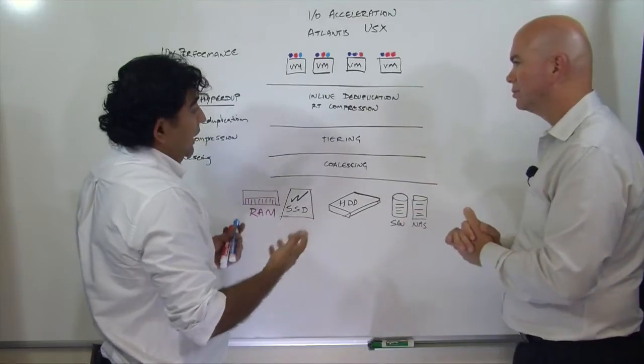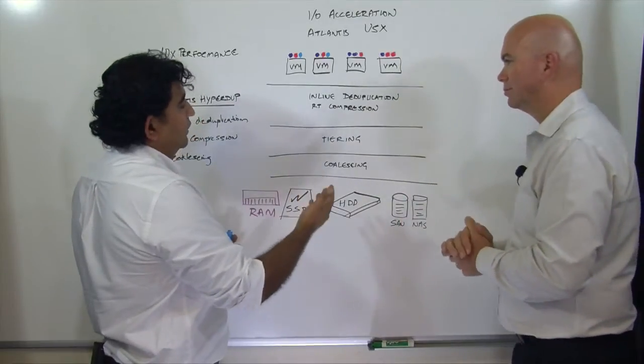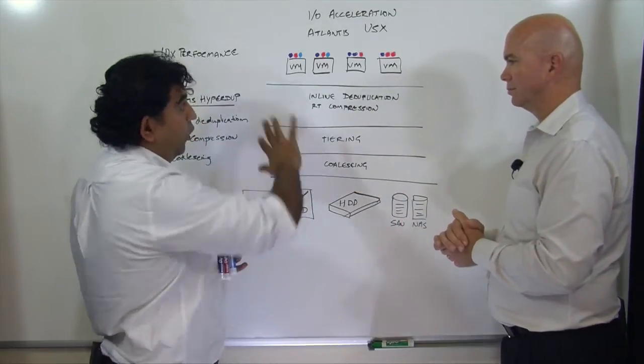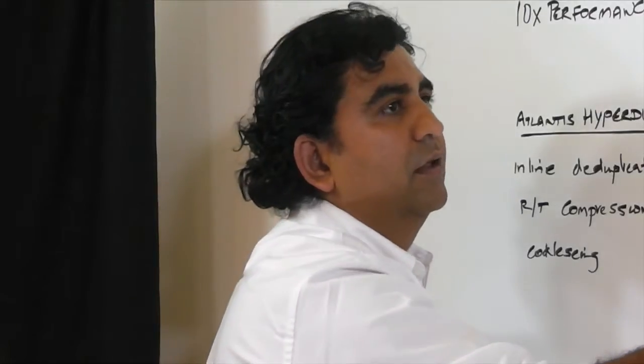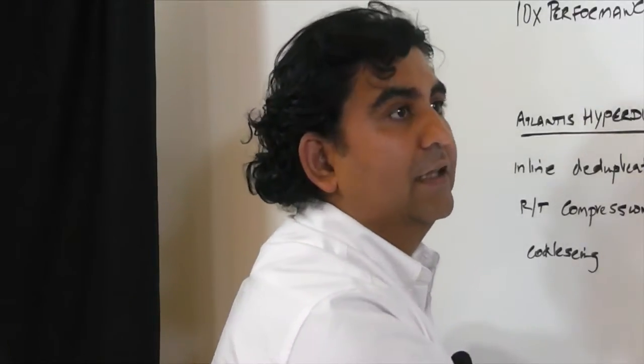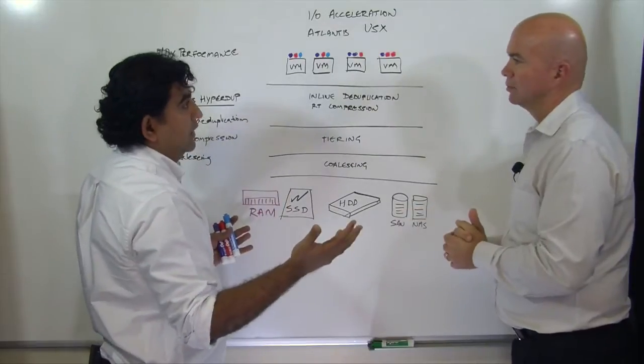So clearly, you guys have that content awareness. What does that give you? What it gives you is the ability to basically service 90% to 95% of all IO requests from the performance tier rather than need to go down over here, even across very large data sets.